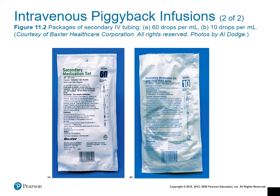Here's an example of some of the tubing used for the secondary bag. Notice you have different drop factors — the first one has 60 drops per milliliter and the second one is 10 drops per milliliter.